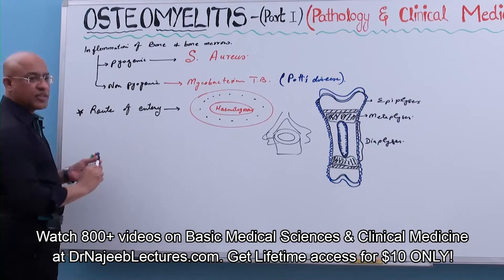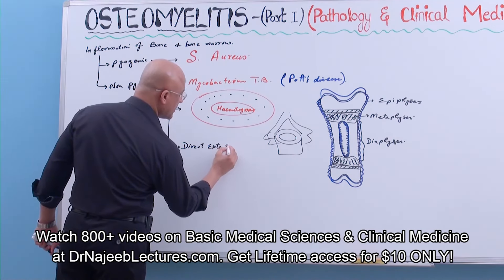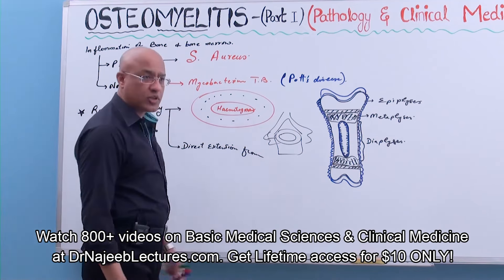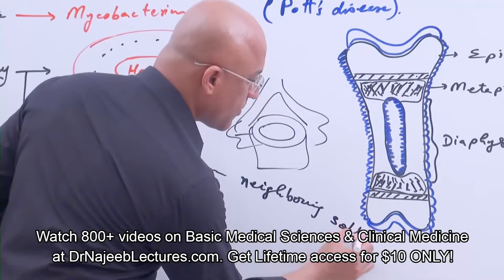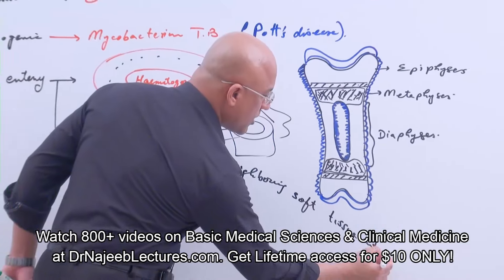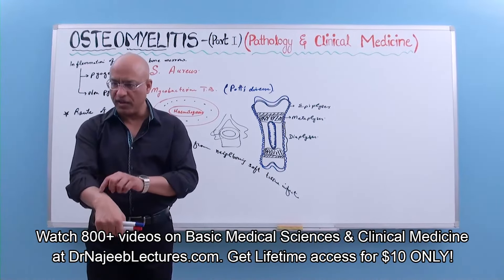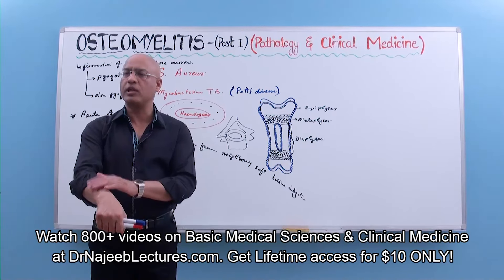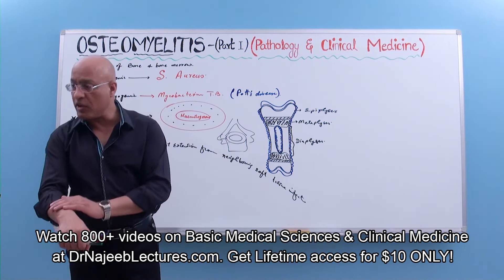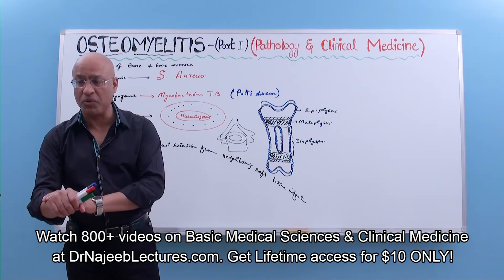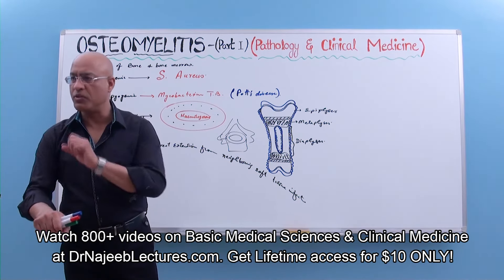The second route of entry is direct extension from neighboring soft tissue infections. For example, if there is a soft tissue infection initially limited in the soft tissue, if it is not treated well it may eventually damage the periosteum. The periosteum is usually resistant to bacteria and protects the bone, but a periosteal breach from a neighboring infection allows organisms to enter the bone.